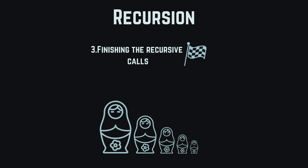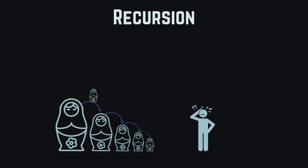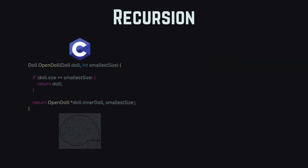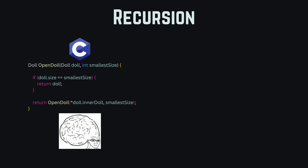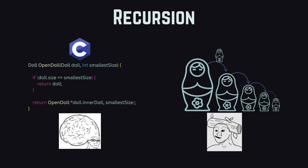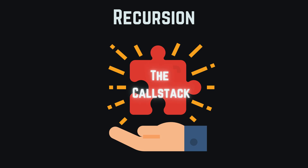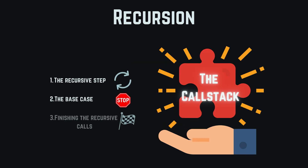Step three is a harder step to see since it's not directly visible in the code. But what basically happens is, if we look at the doll animation, every doll who called itself recursively is passing back the smallest doll to the previous doll. This might be confusing since it's hard to imagine, and many students struggle to understand this step. To really understand what goes on in the code and not just with some simplified animations, we still miss a puzzle called the call stack, which will be key to understanding every recursion step.